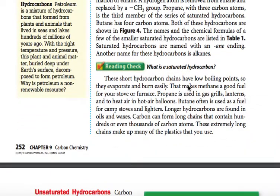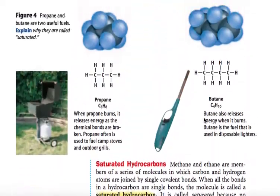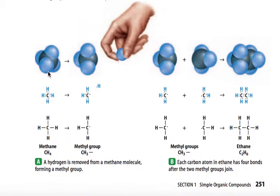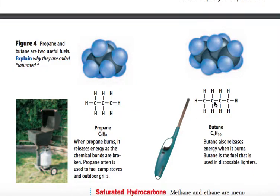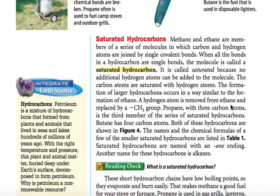These short hydrocarbon chains have low boiling points, so they evaporate and burn easily. That makes methane a good fuel for your stove or furnace. Propane is used in gas grills and lanterns, and to heat the air in hot air balloons. Butane is often used as fuel for camp stoves and lighters. Longer hydrocarbons are found in oils and waxes. Carbon can form many long chains containing hundreds or even thousands of carbon atoms, and these extremely long chains make up many of the plastics used today.